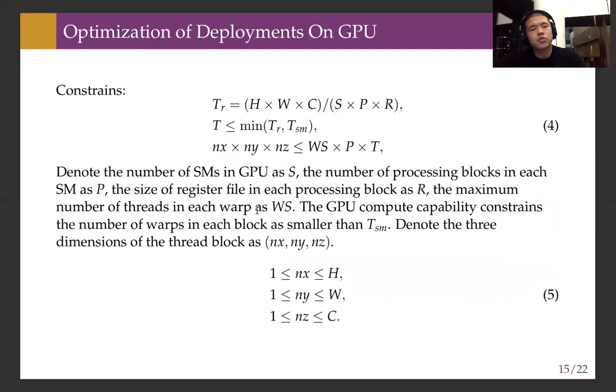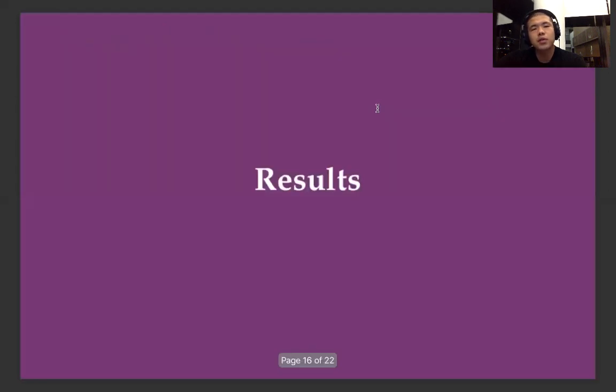There are constraints on register file size on each SM, thread number limits by CUDA, and dimensional constraints. We use Bayesian optimization to solve this design space exploration problem and obtain the optimal block size.